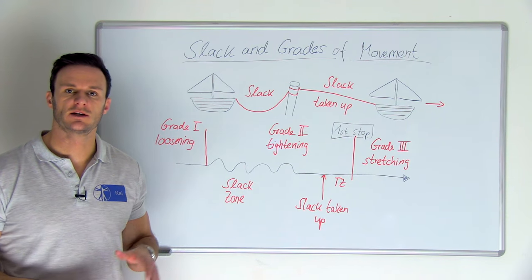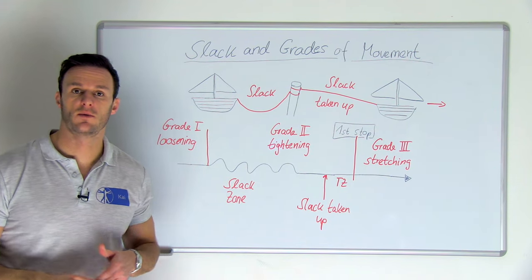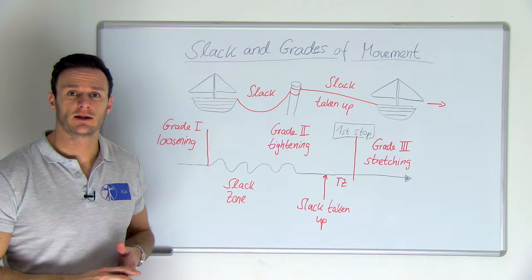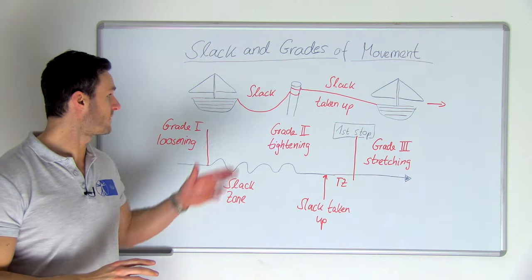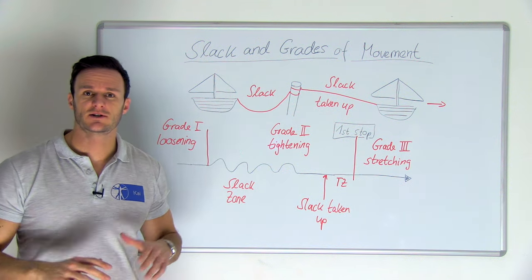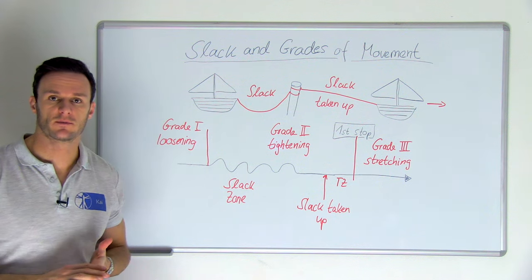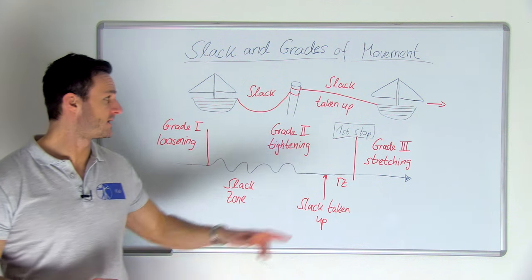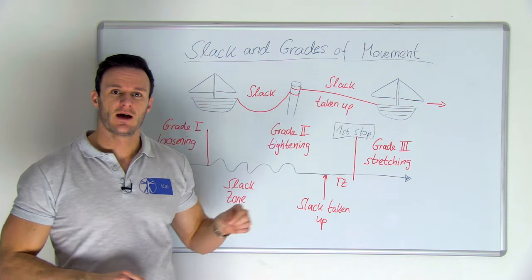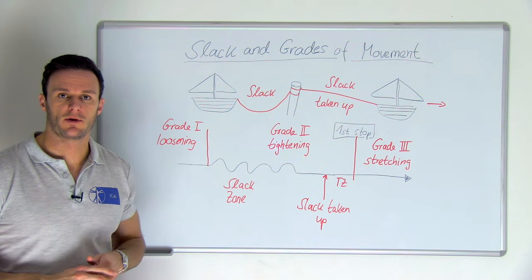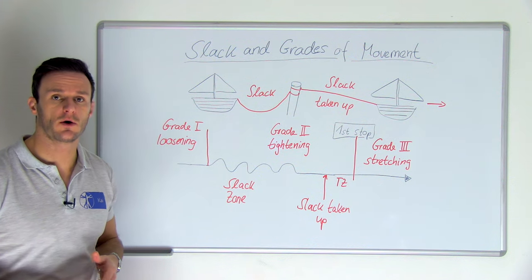In a relaxed position, there is no tension on our tissues comparable to a boat that is drifting at the dock with a floppy rope. As soon as the boat is drifting away from the dock, the rope will come under tension. This range from a floppy rope until it becomes taut is called slack.